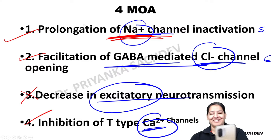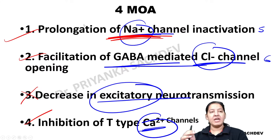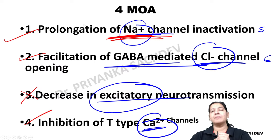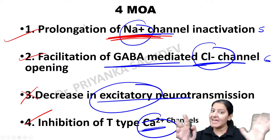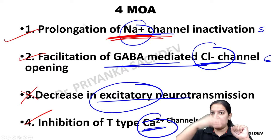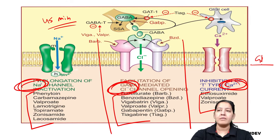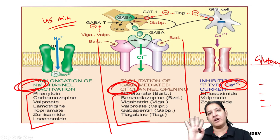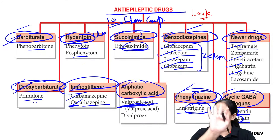A student asks which classification to write in the university exam. In university exams, write the mechanism-of-action classification — four categories: sodium channel, chloride channel, glutamate receptor, and calcium channel — and write the drug names under each category. For the chemical composition classification, just broadly know it.